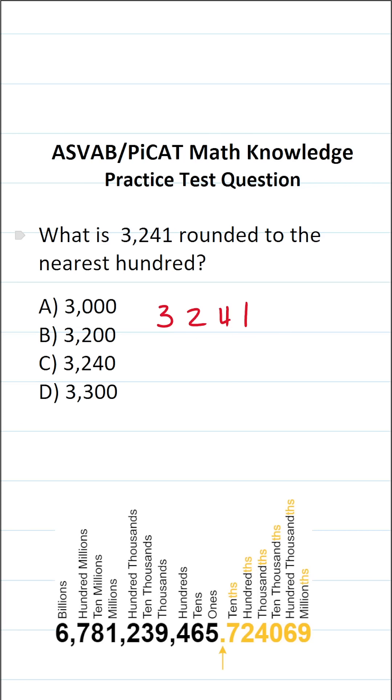For this problem, we're rounding to the nearest hundred. So the first thing we want to do is identify the number that's in our hundreds place. Again, I read this as 3,200. So the number that's in our hundreds place is clearly 2.